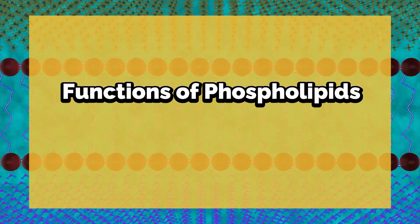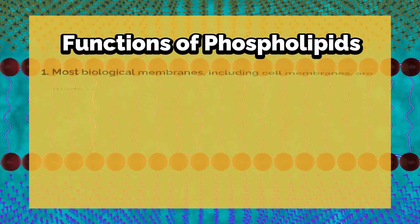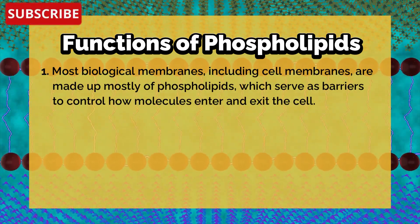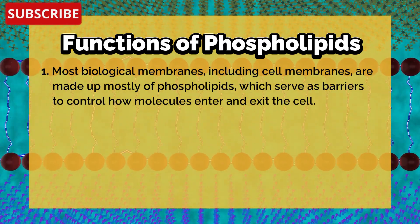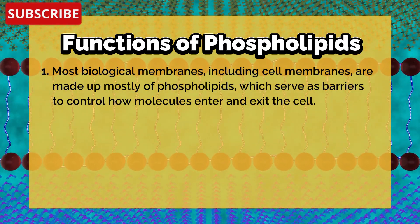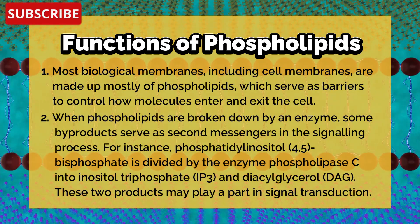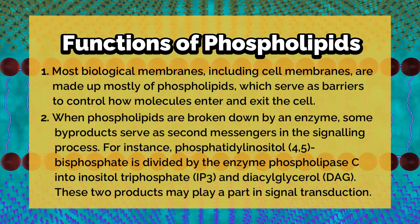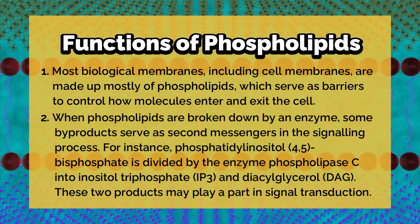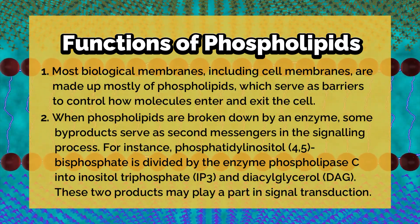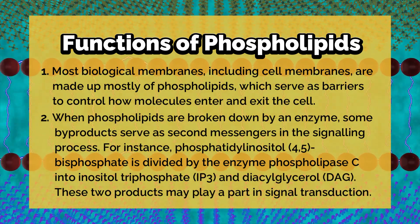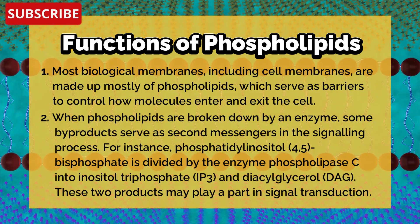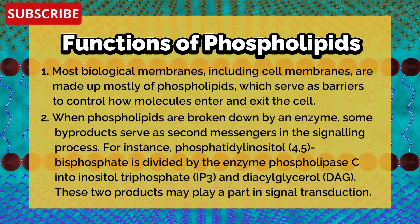Lastly, functions of phospholipids. Most biological membranes, including cell membranes, are made up mostly of phospholipids, which serve as barriers to control how molecules enter and exit the cell. When phospholipids are broken down by an enzyme, some bioproducts serve as second messengers in the signaling process. For instance, phosphatidylinositol-4,5-bisphosphate is divided by the enzyme phospholipase C into inositol triphosphate and diacylglycerol.